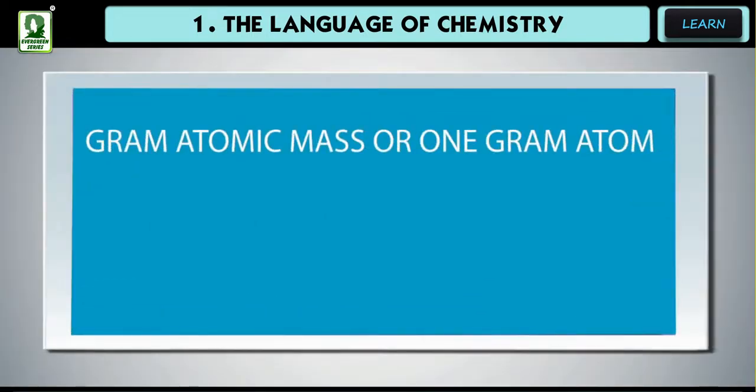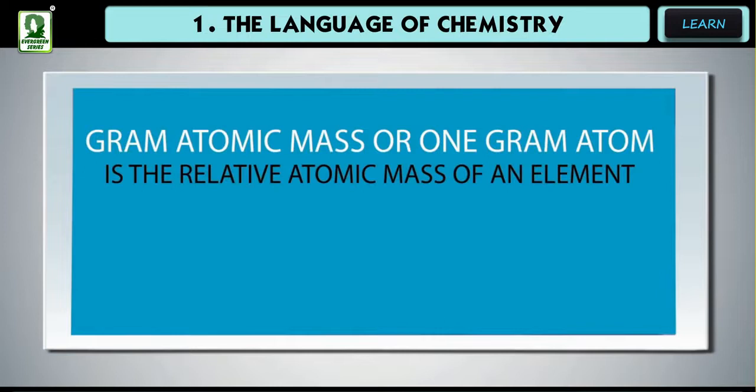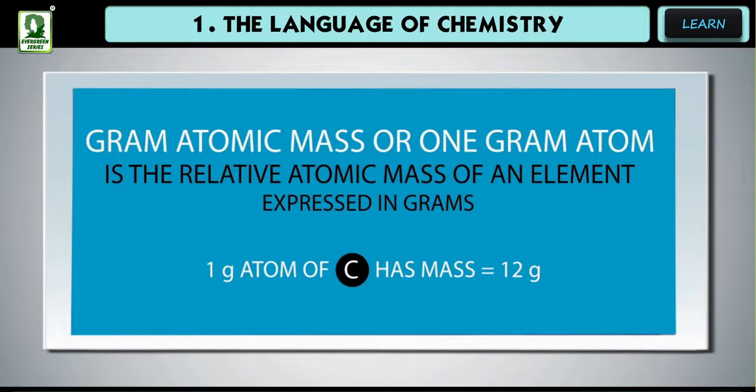Gram atomic mass or 1 gram atom is the relative atomic mass of an element expressed in grams. 1 gram atom of C has mass 12 grams. 1 gram atom of Na has mass 23 grams.